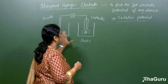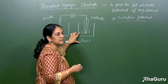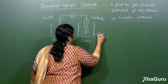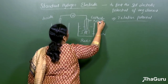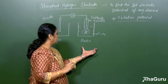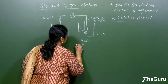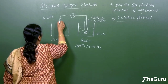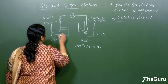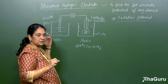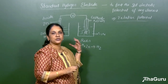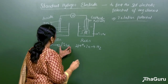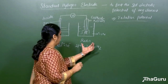Let me describe a setup to find the electrode potential of a given element. We have an anode and a cathode. The cathode is a platinum electrode — the standard hydrogen electrode — where the H⁺ concentration is 1M and hydrogen gas is passed at one atmospheric pressure, so reduction takes place: H⁺ + e⁻ → H2. The anode is a zinc electrode dipped in zinc sulfate solution at one molar concentration.